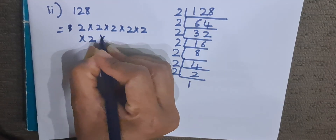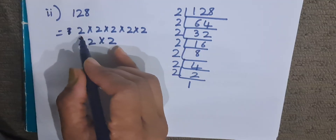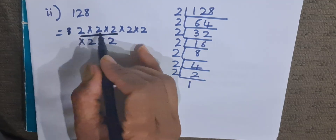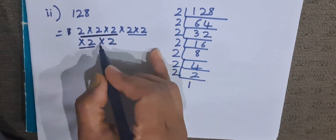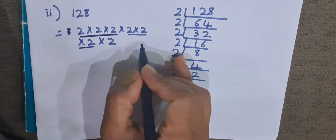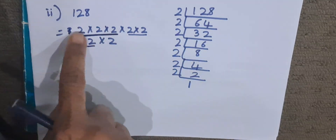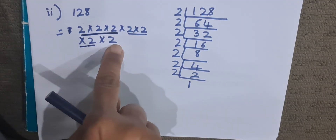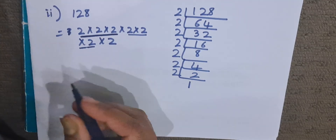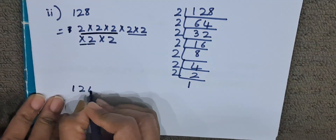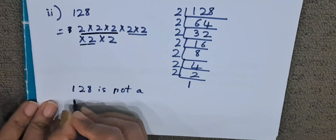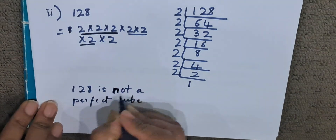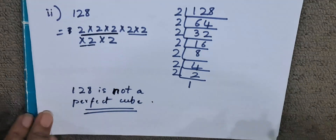Now we group the seven 2s into groups of three: one group of three 2s, another group of three 2s, and one single 2 is left alone without a group. Since there is one 2 left ungrouped, 128 is not a perfect cube.